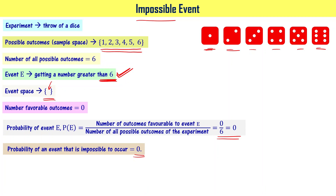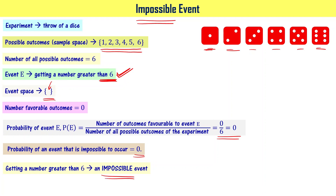Similarly, getting 10 runs from one ball in cricket is not possible — probability is 0. By looking at the event definition itself, we can say whether it is possible or not. Getting a number greater than 6 when you throw a dice is an impossible event. Getting 120 marks when you write an exam for 100 marks is also an impossible event.